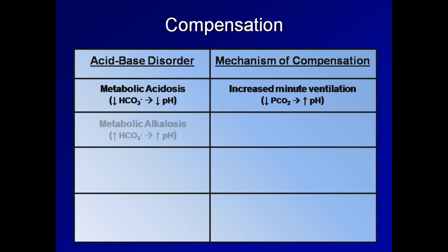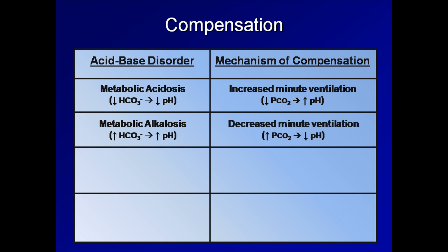In a metabolic alkalosis, the bicarb is high and thus so is the pH. The body responds by decreasing minute ventilation, which increases pCO2 and drives pH back down somewhat.